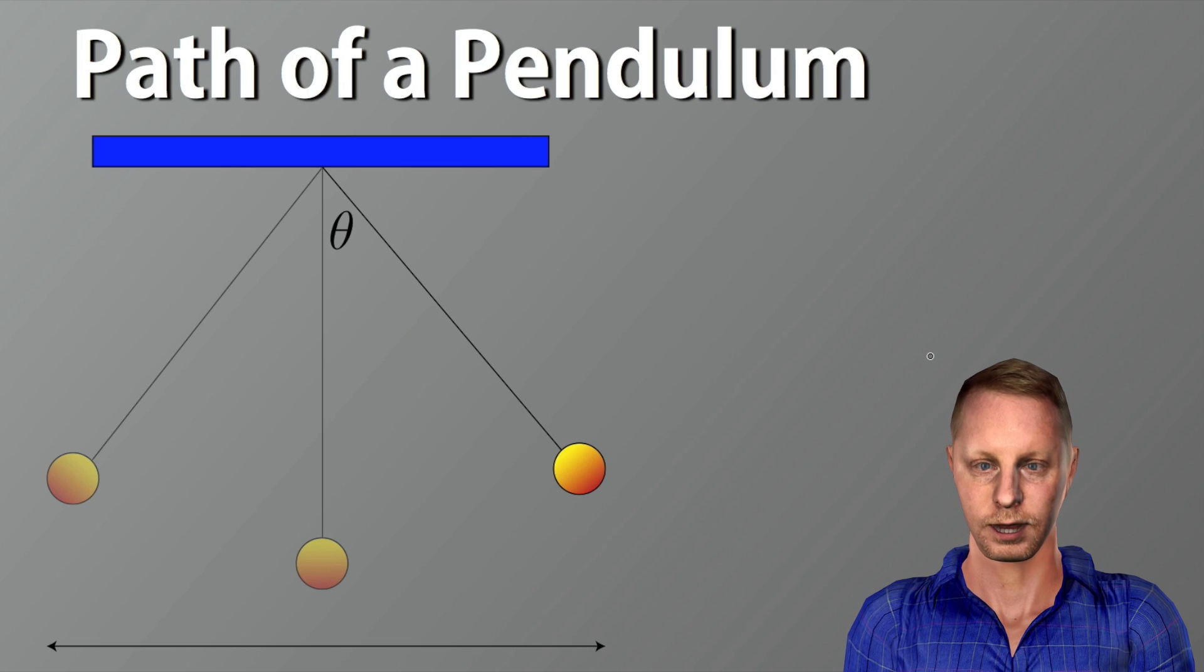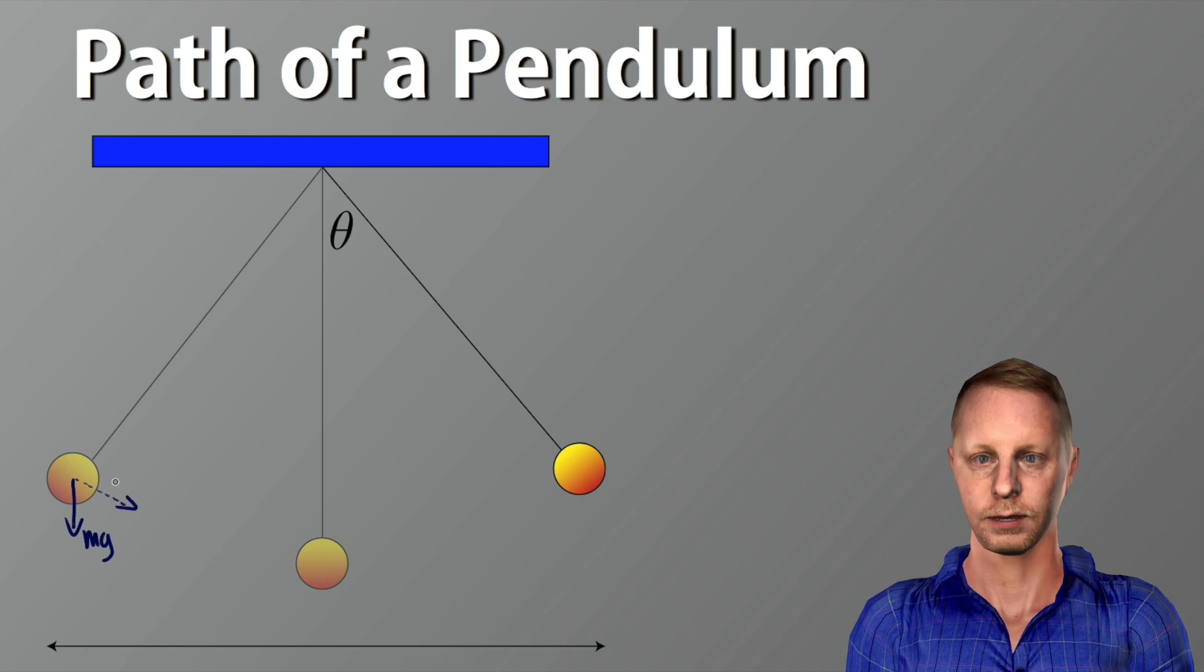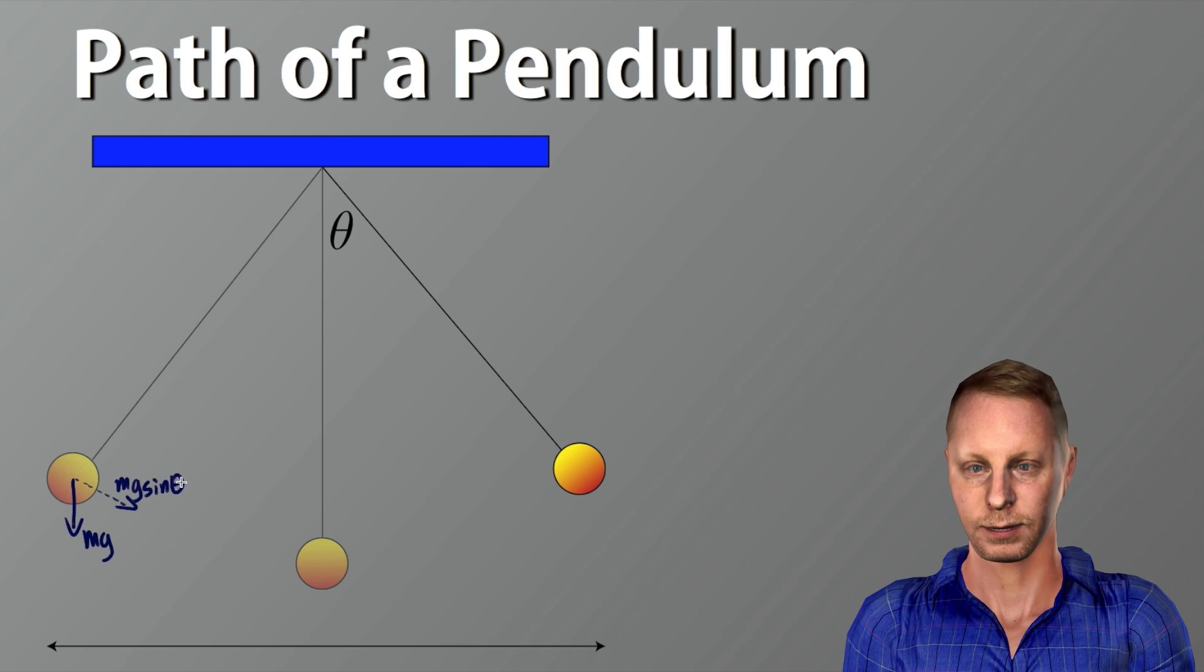Now if we examine the path of a pendulum, at the highest point, shown over here on the left, the mass is being pulled back toward its equilibrium position by gravity. We have the force of gravity, the weight, straight down. But specifically, it's the component of gravity along the mass's path, which at this point looks like it's going to be something like that if I were to draw it that way. That's going to be mg sine theta, where theta is the angle between the vertical and the current position of the string. In this position, this would be our theta.